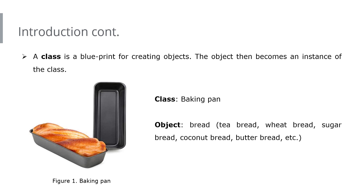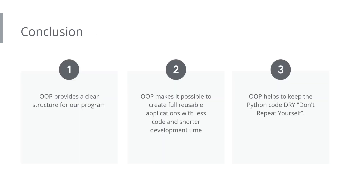If you get this concept, we can understand the usefulness of object-oriented programming. First, OOP provides a clear structure for your program — whichever bread you create will have that structure and won't exceed the template of the baking pan. If the baking pan is rectangular, the bread comes out rectangular; if it's circular, the bread comes out circular.